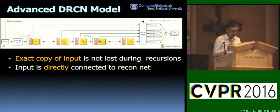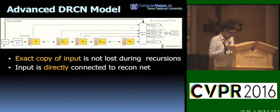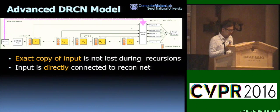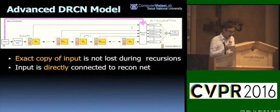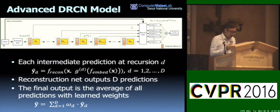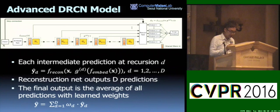For SR, input and output images are highly correlated, so carrying most input values until the end of the network is inevitable but very inefficient. So we added a skip connection from the input to the reconstruction network. Now the input image is directly fed into the reconstruction net whenever it is used during recursions. This has two advantages: first, network capacity to store the input signal during recursions is saved; second, an exact copy of the input signal can be used during target prediction. The final output is the weighted sum of all intermediate predictions with learned weights.